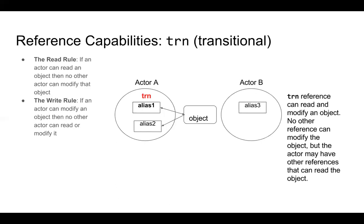TRN (transitional) means an alias can read and modify an object. No other reference can modify the object, but the actor may have other aliases that can read the object. Actor A can have two aliases — if one is transitional, the other alias could read from that object but can't write to it. That would otherwise violate the read rule and write rule.